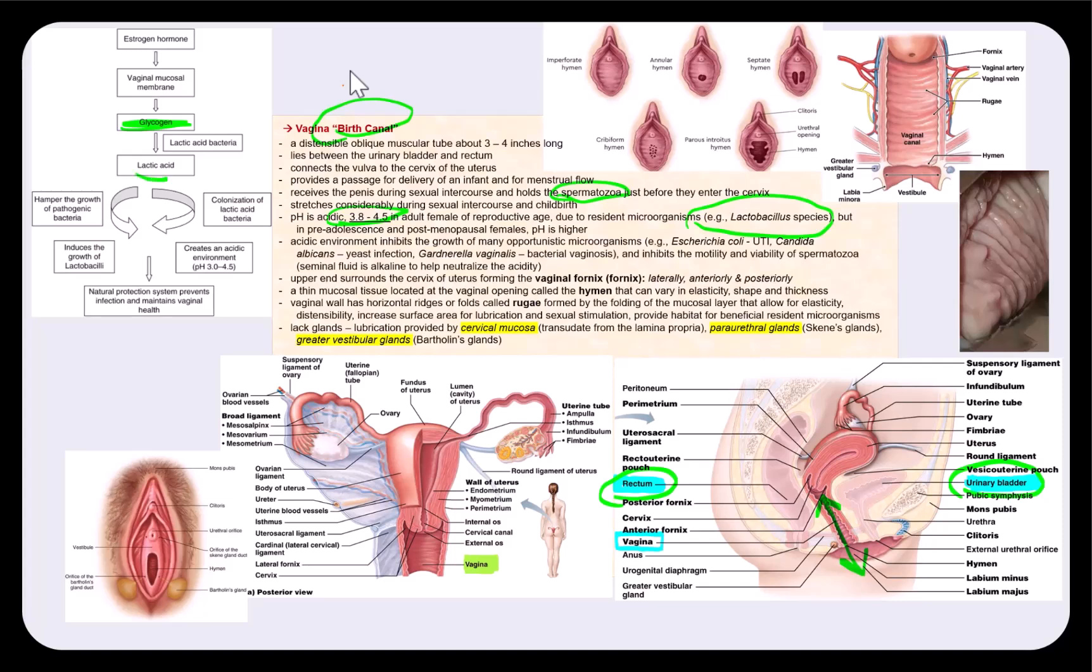to convert this glycogen to lactic acid. And this will prevent the growth of many opportunistic microorganisms that will take advantage if this pH were to increase, such as Escherichia coli, which has been implicated in urinary tract infections, UTI,